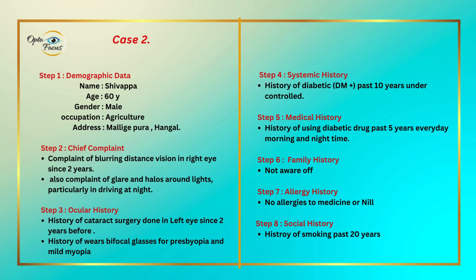Case 2. Step 1 — Demographic data: Name: Shivappa. Age: 60 years. Gender: Male. Occupation: Agriculture. Address: Malligyapura, Kangan. Step 2 — Chief complaint: Complaint of blurring of distance vision in right eye since 2 years. Also complaint of glare and halos around lights, particularly when driving at night. Step 3 — Ocular history: History of cataract surgery done in left eye 2 years before. History of wearing bifocal glasses for presbyopia and mild myopia.